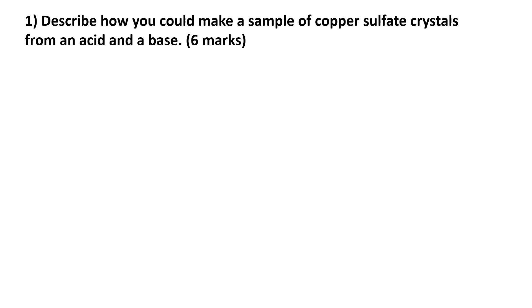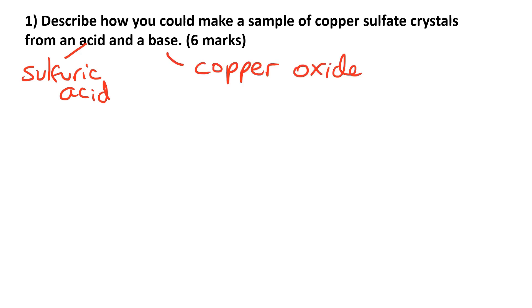First of all you need to decide what acid to use. If you want to make copper sulfate crystals we need to start with sulfuric acid. You also need to decide what chemical we're going to use as a base, and you need to remember that bases are metal oxides, so if we want to make copper sulfate crystals we need to start with copper oxide.